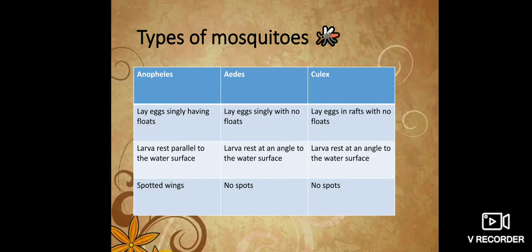Regarding their eggs: Anopheles lay eggs singly having floats, Aedes lay eggs singly with no floats, and Culex lay eggs in rafts with no floats. Regarding their larvae, Anopheles larvae rest parallel to the water surface, but larvae of Aedes and Culex rest at an angle to the water surface.